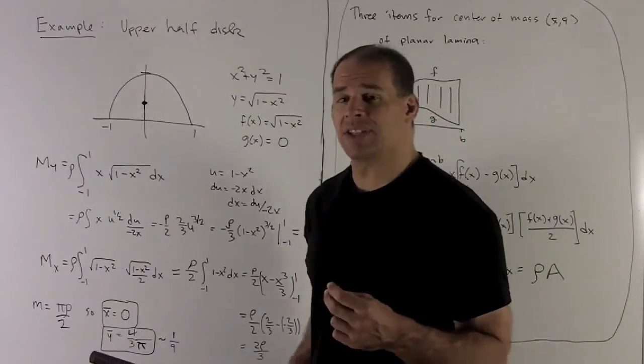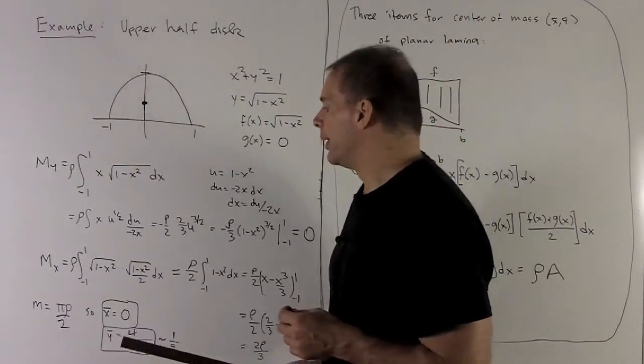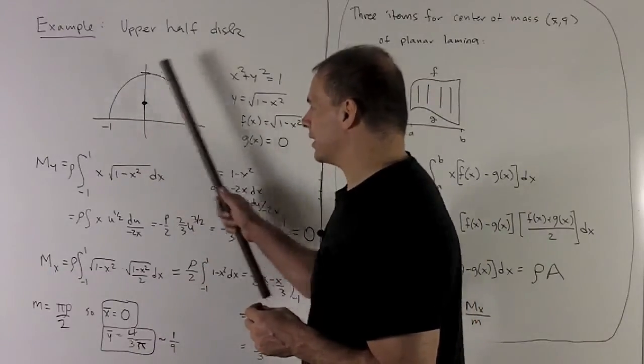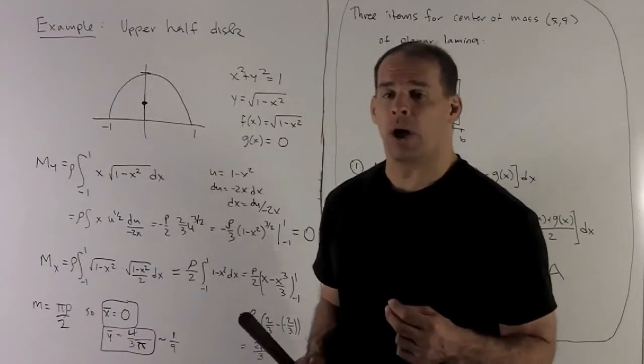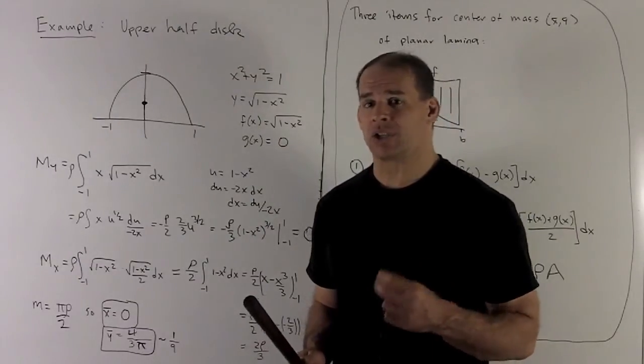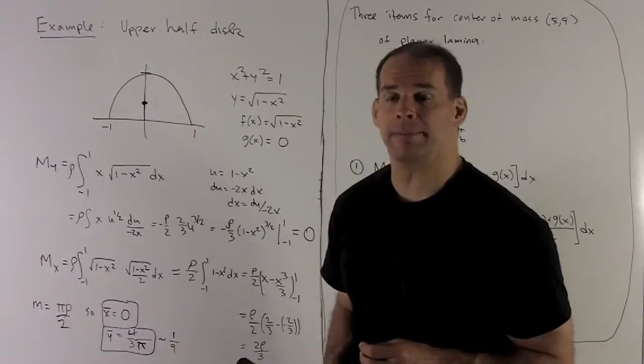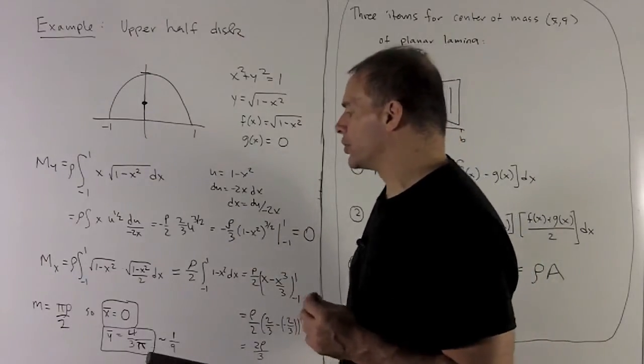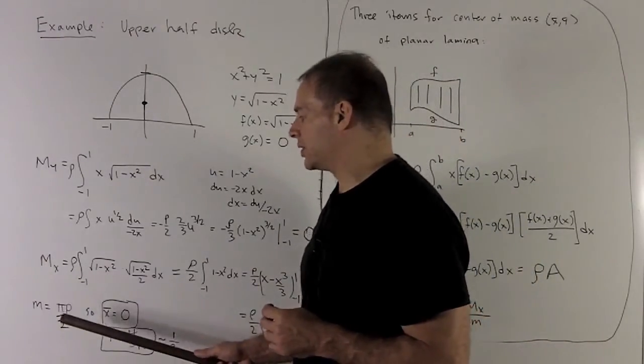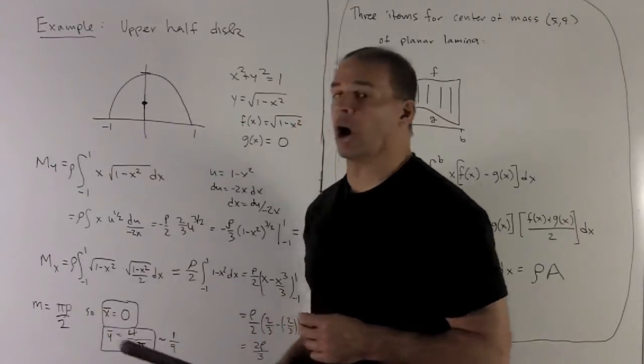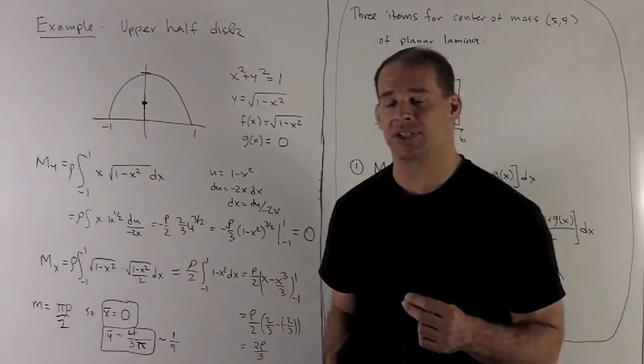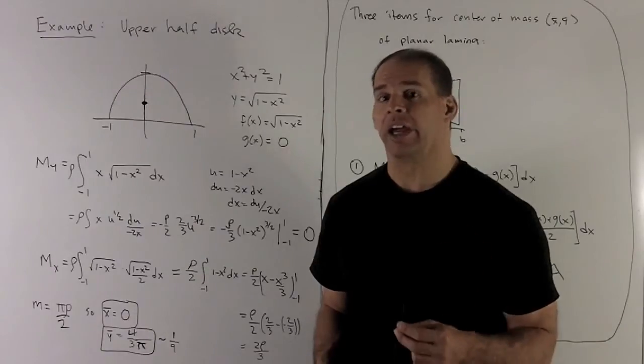All I need now is the mass, and then I can get my coordinates. Here we don't need to do any work to get the mass. I have a circle, radius 1. So its area is going to be pi r squared, or just pi. And then the top half is just going to be half of that. So my area is pi over 2, which means my mass is pi over 2 times rho. The mass is rho, your density, times your area.